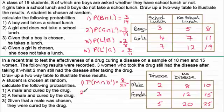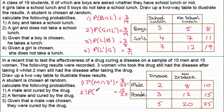For number two, a female is chosen and cured by the drug: that's 12 females out of 25, so the probability is 12 out of 25. In set notation that's P(Female ∩ D'), where D' is the complement of disease, meaning they have no disease after the drug.